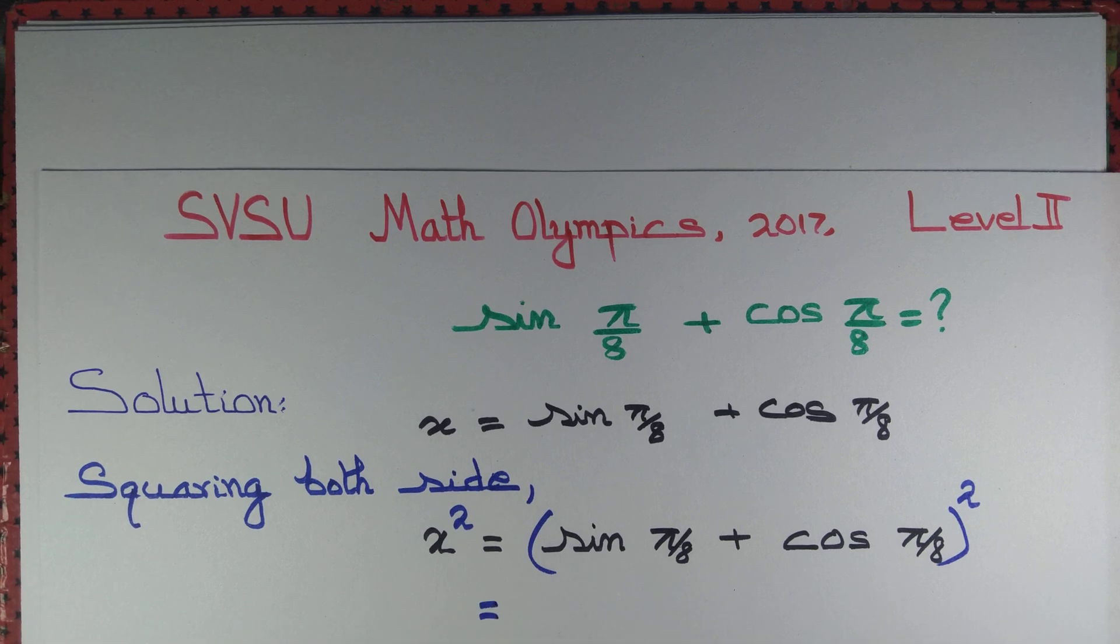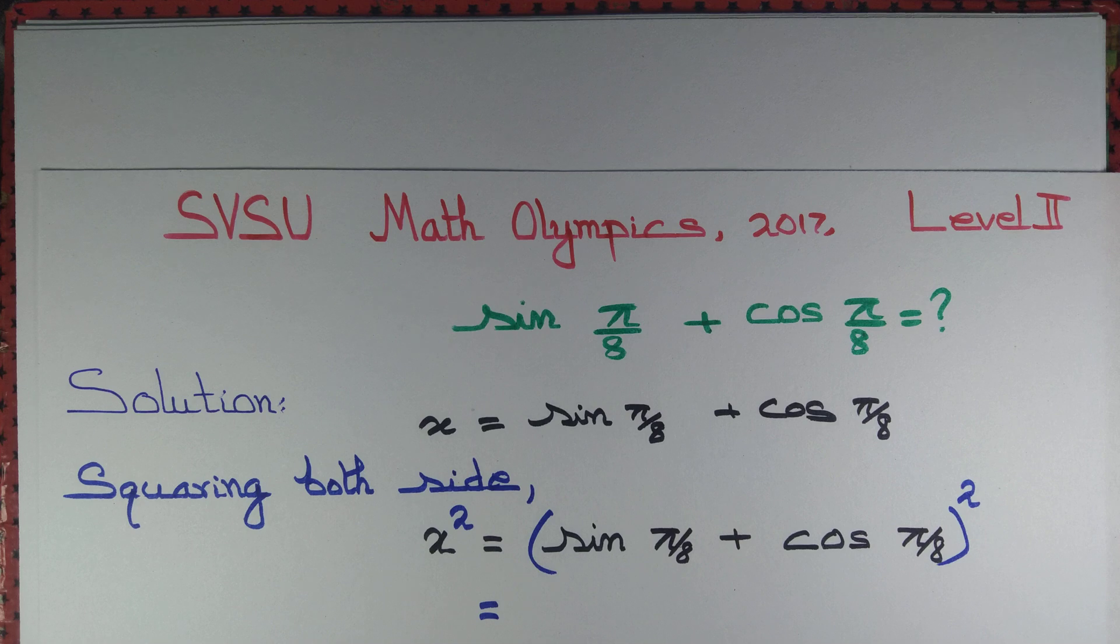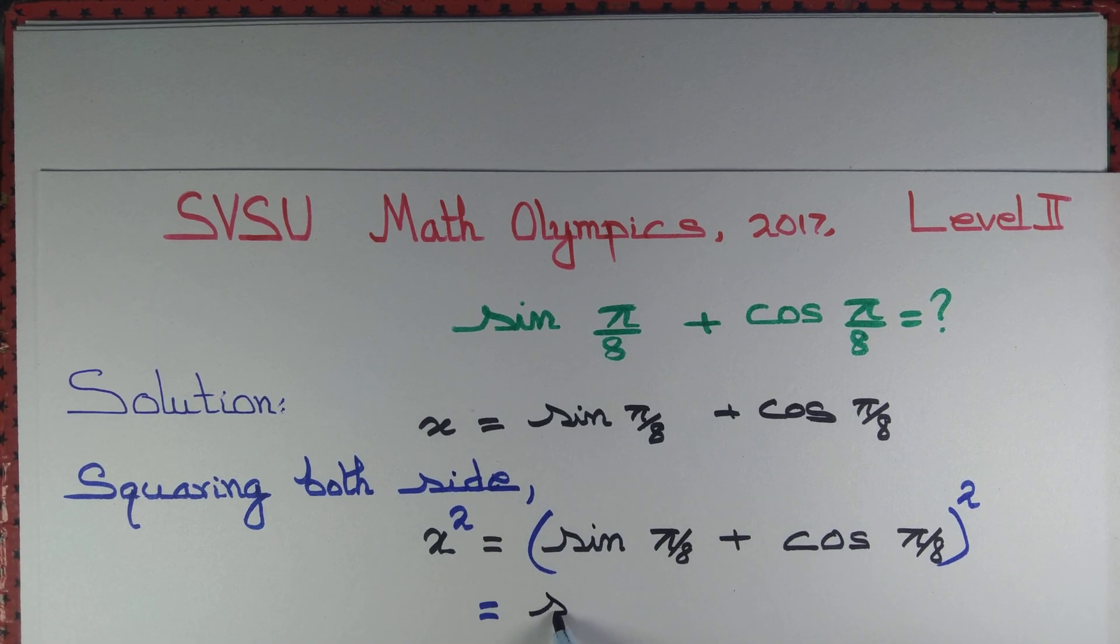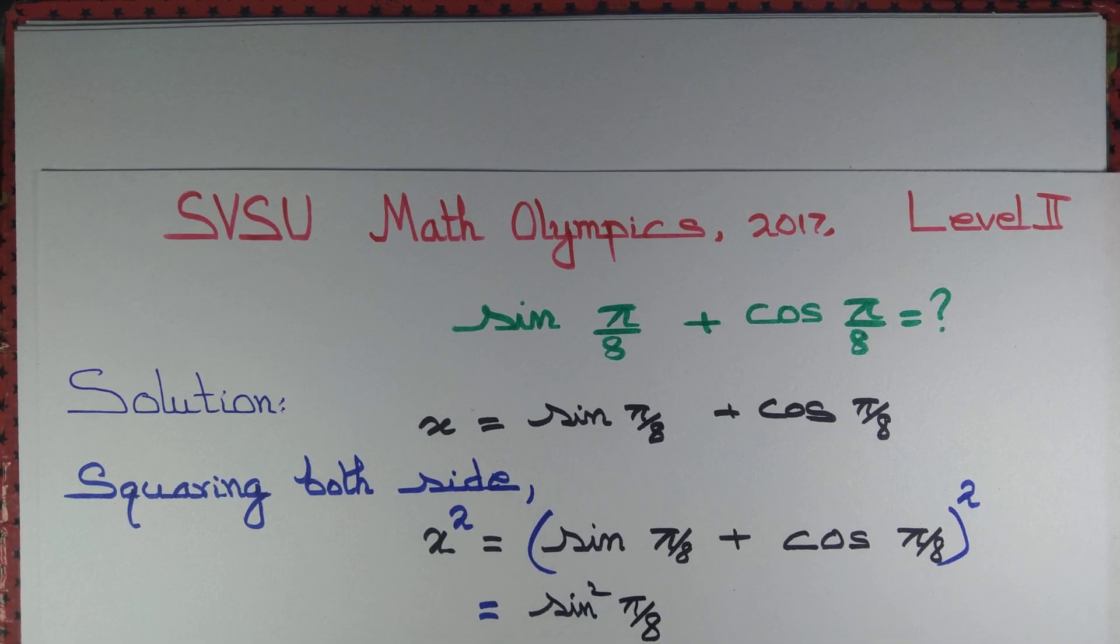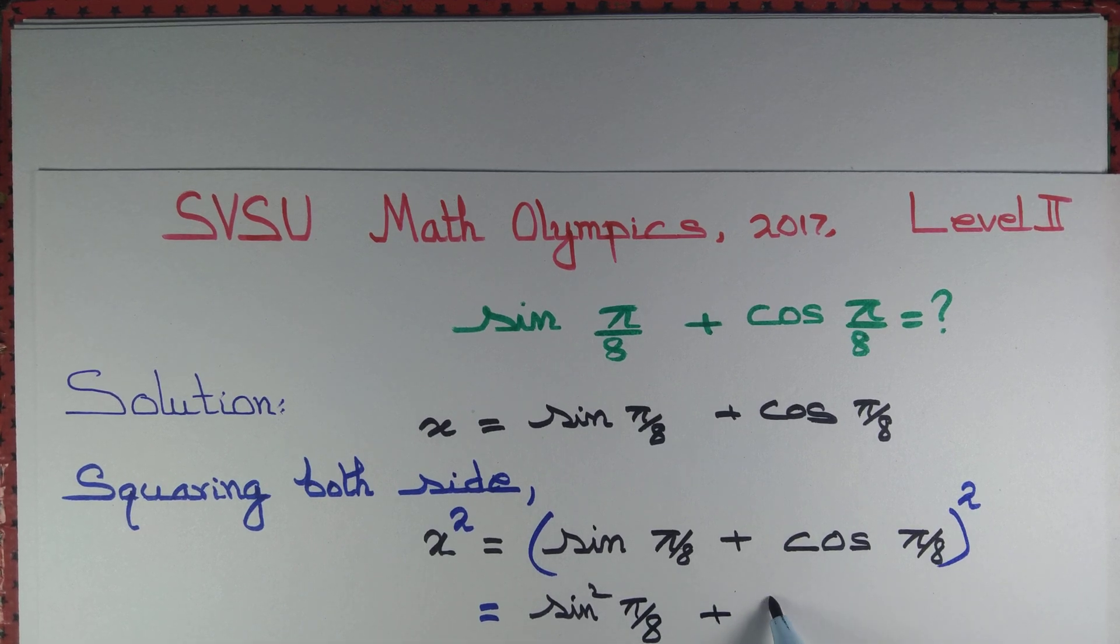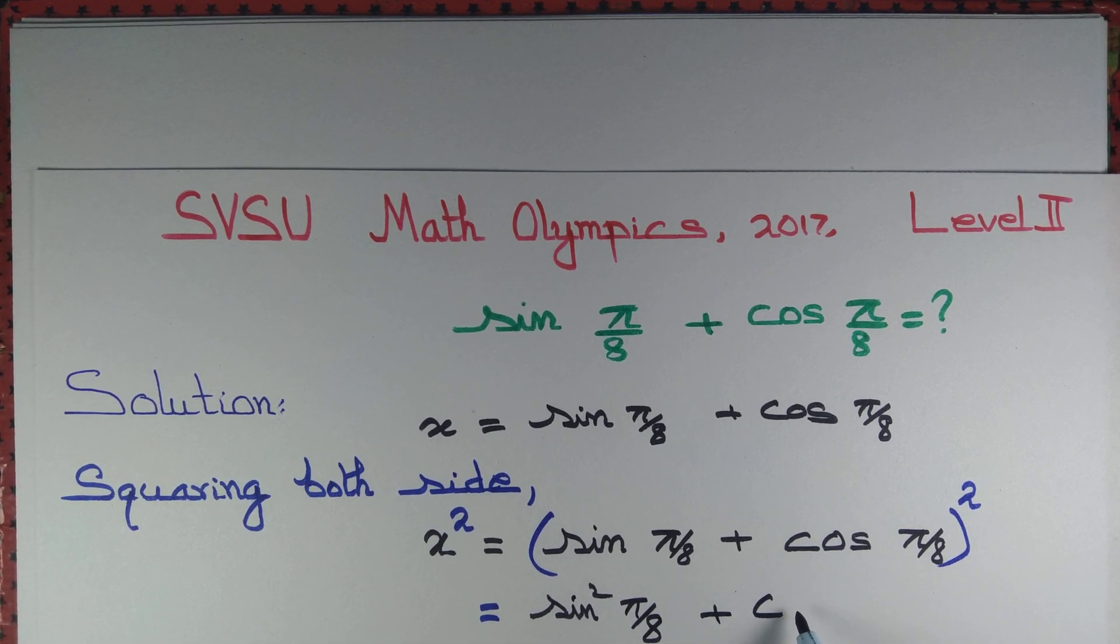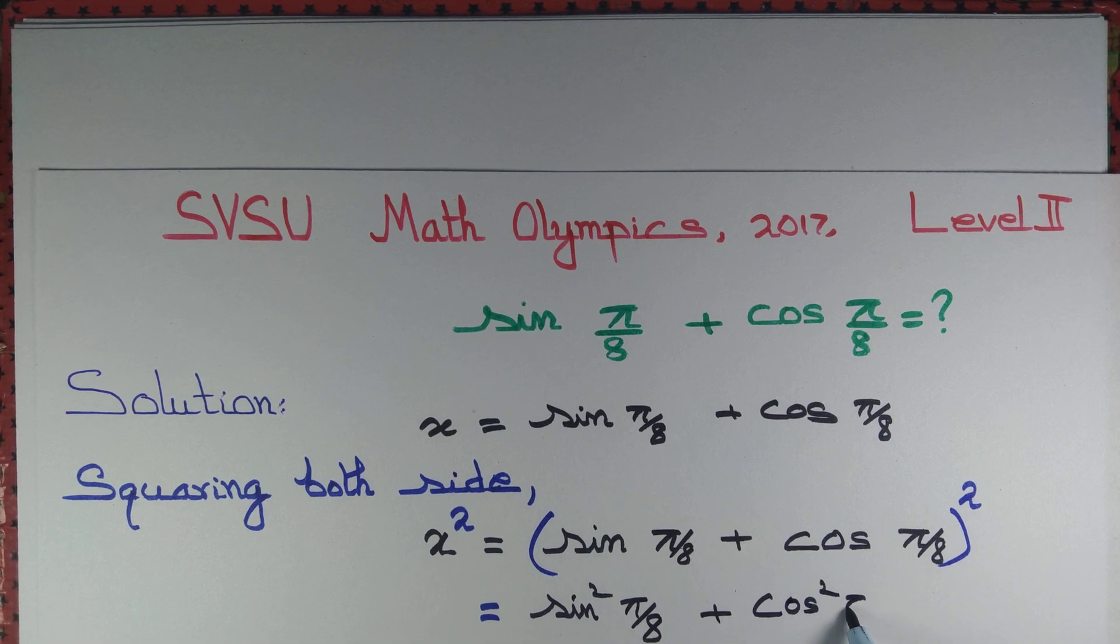Now we know the formula that a plus b whole thing squared equals a² plus 2ab plus b². So sin² π/8, that's a², plus cos² π/8, plus 2 into sin π/8 into cos π/8.